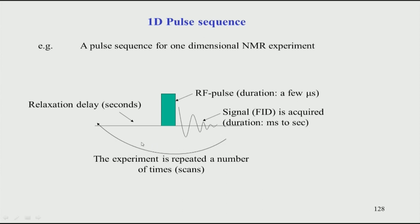This is how a 1D NMR experiment is done — by repeating this sequence a number of times. That is why we use the word pulse sequence: it is a sequence of delays and pulses. You have a relaxation delay, then you apply a 90-degree excitation pulse, then you record the signal, and then you go back. When you repeat this N number of times, each FID is stored and added together — each cycle is called a scan, and if you do it N times we say N scans.